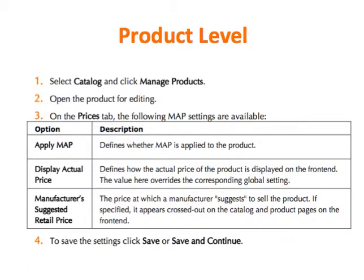Here's how you set up your product level. First, select Catalog and click Manage Products. Second, open the product for editing. Third, on the Prices tab, the following MAP settings are available. The first option is Apply Map — it defines whether or not MAP is applied to this product, as a simple yes-no option. Then Display Actual Price defines how the actual price of the product is displayed on the front end, and the value here overrides the corresponding global setting. Manufacturer Suggested Retail Price is the price at which a manufacturer suggests to sell a product — if specified, it appears crossed out on the catalog and product pages on the front end. Then go ahead and save the settings by clicking Save or Save and Continue.